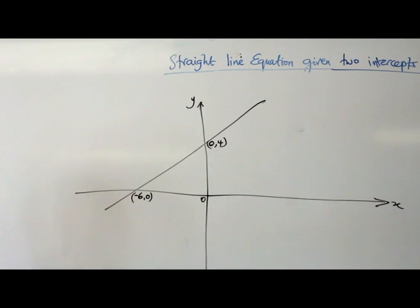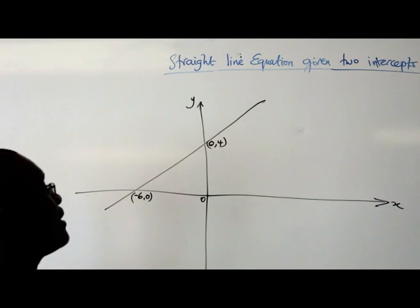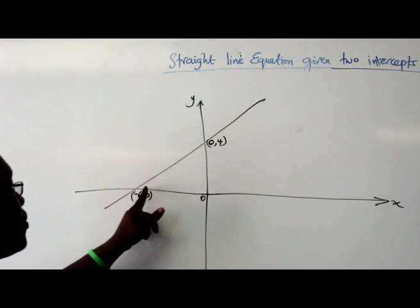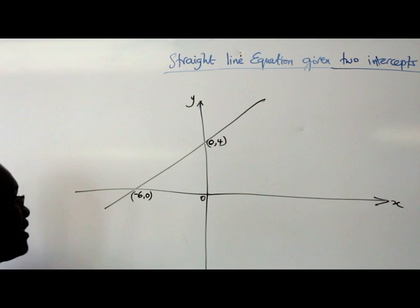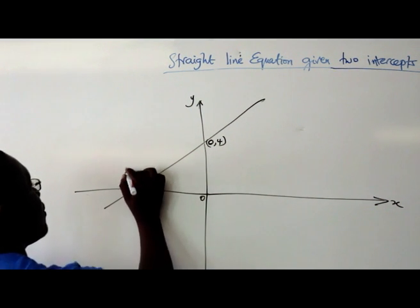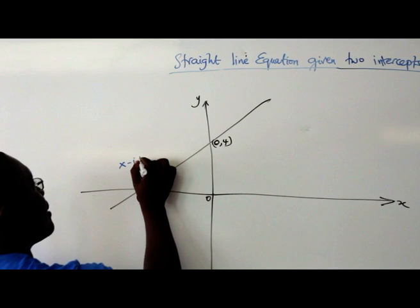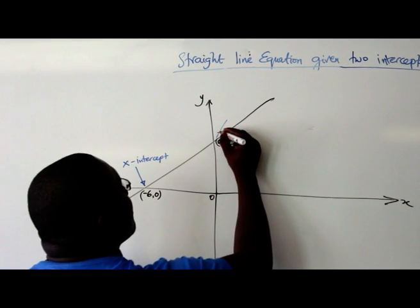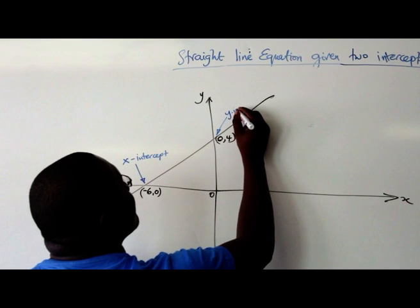Let's use those two points as our two intercepts. This is called the y-intercept and this is called the x-intercept. This point is called the x-intercept and this point is called the y-intercept.